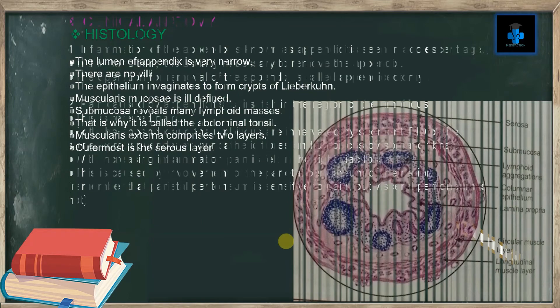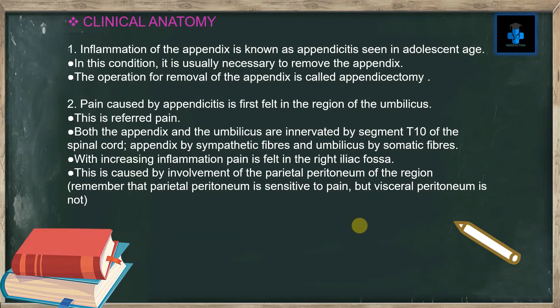Clinical anatomy: inflammation of the appendix is known as appendicitis, commonly seen in adolescent age. In this condition it is usually necessary to remove the appendix; the operation is called appendicectomy. Pain caused by appendicitis is first felt in the region of the umbilicus — this is referred pain. Both the appendix and the umbilicus are innervated by segment T10 of the spinal cord: the appendix by sympathetic fibers and the umbilicus by somatic fibers.